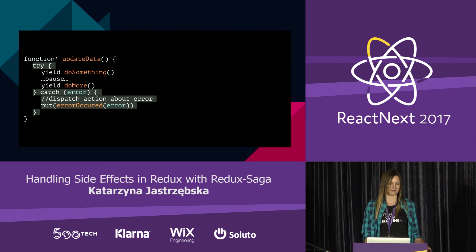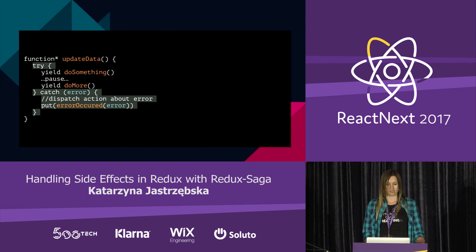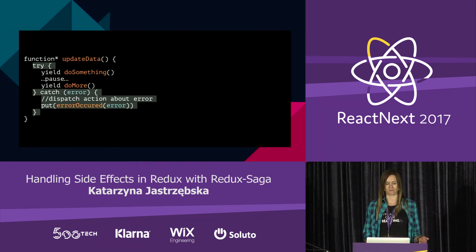We can dispatch the error to our reducer and simply show users that a problem occurred. Of course we can implement some kind of retry logic — retrying the call a few times — but we can also just show our users that something went wrong and give them an option to reload.